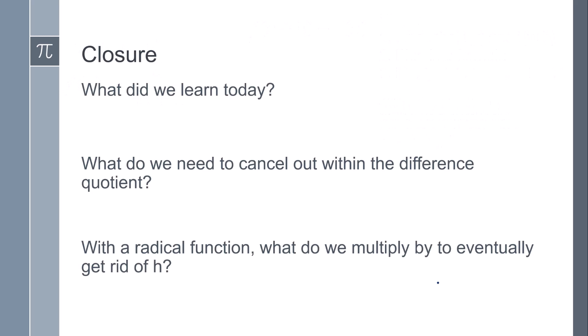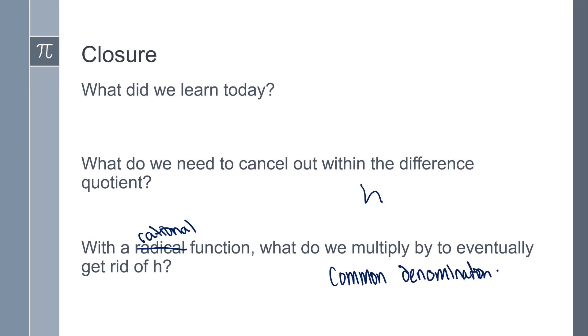So what did we learn today? We learned how to do the difference quotient with rational functions. As a reminder, what do we need to cancel out in the difference quotient? We need to get rid of that h. With a rational function, we need to multiply the numerator and the denominator by the common denominator of the fractions. This concludes our lesson — if you have any other questions, please leave them in the comments.